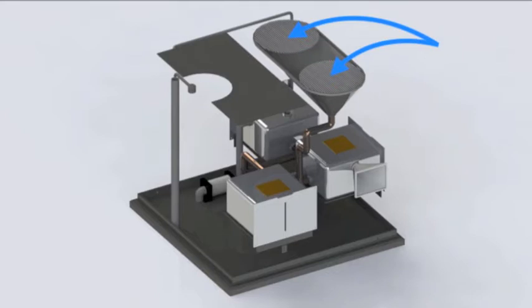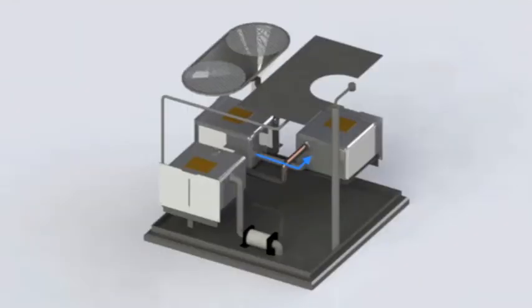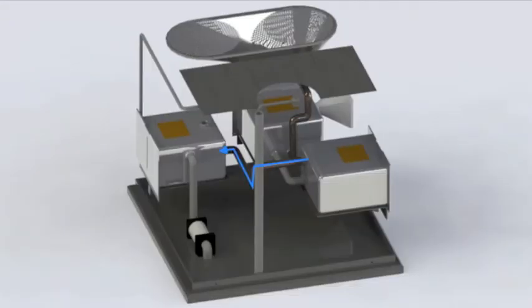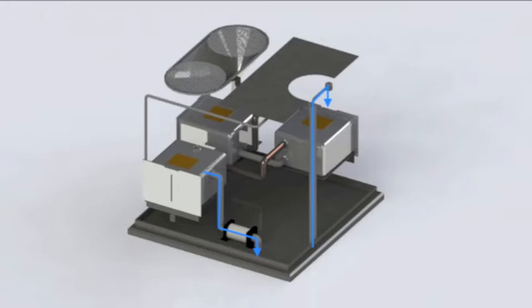First, Refresh takes in air from the top and the carbon dioxide in the air bonds with a chemical to remove carbon dioxide from the air. It then goes into another tank and evaporates the carbon dioxide out of the chemical, and the carbon dioxide is then sent to another tank to react with the catalyst to create carbon monoxide. It is then compressed and stored for use in fuel cell vehicles.